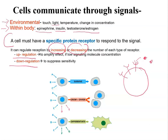Downregulation means the cell is going to try to suppress sensitivity. The membrane will actually fold and engulf the receptor — bringing it in. This is called endocytosis, and the receptor will run through a lysosome, break down, and be destroyed. So we are suppressing sensitivity because there are too many signaling molecules around. For example, if you constantly release insulin into the blood, your cells may actually suppress sensitivity to insulin — and we're talking about the development of diabetes.